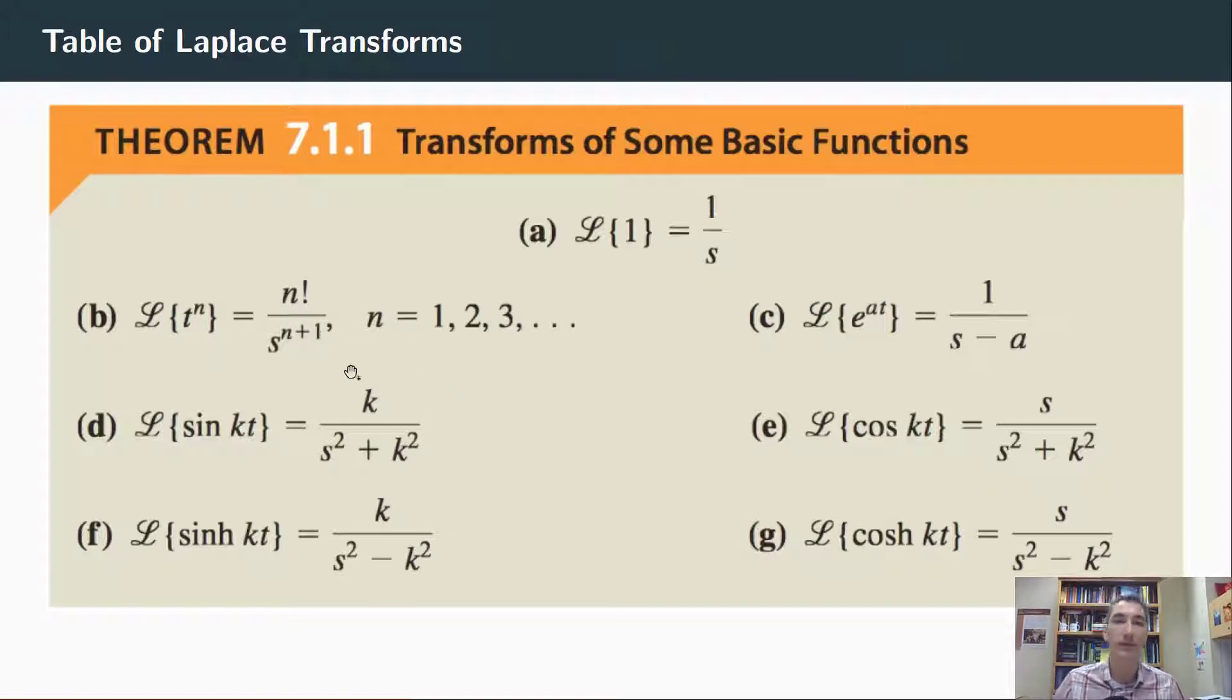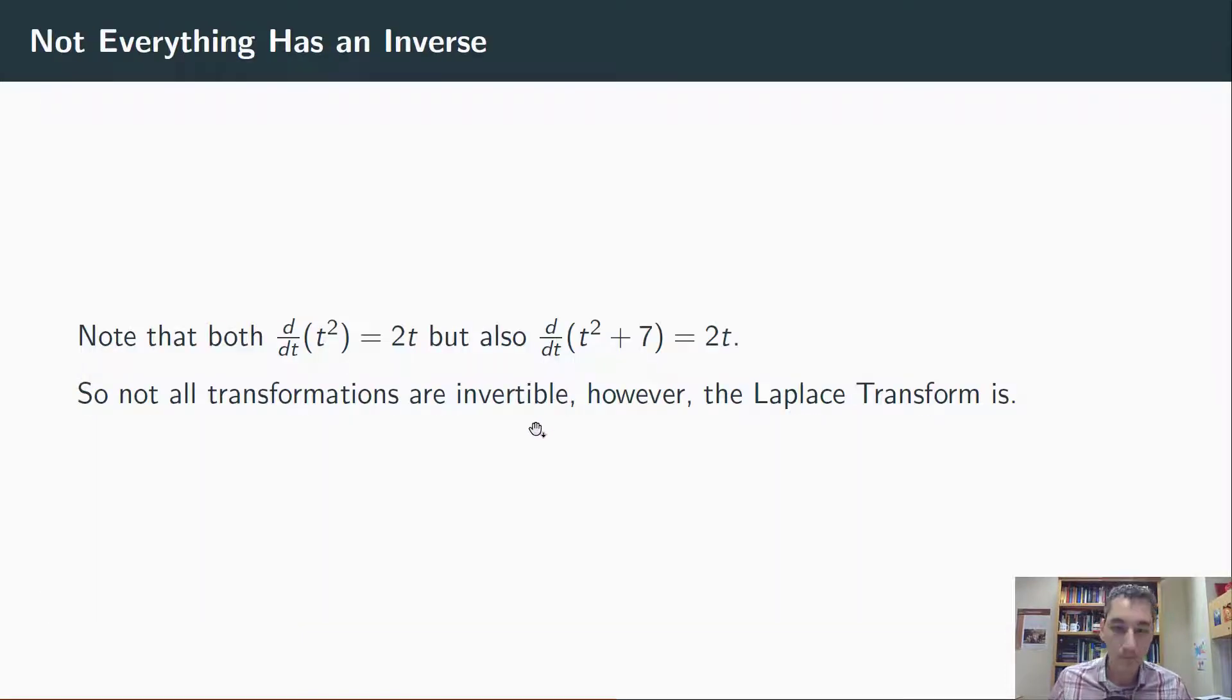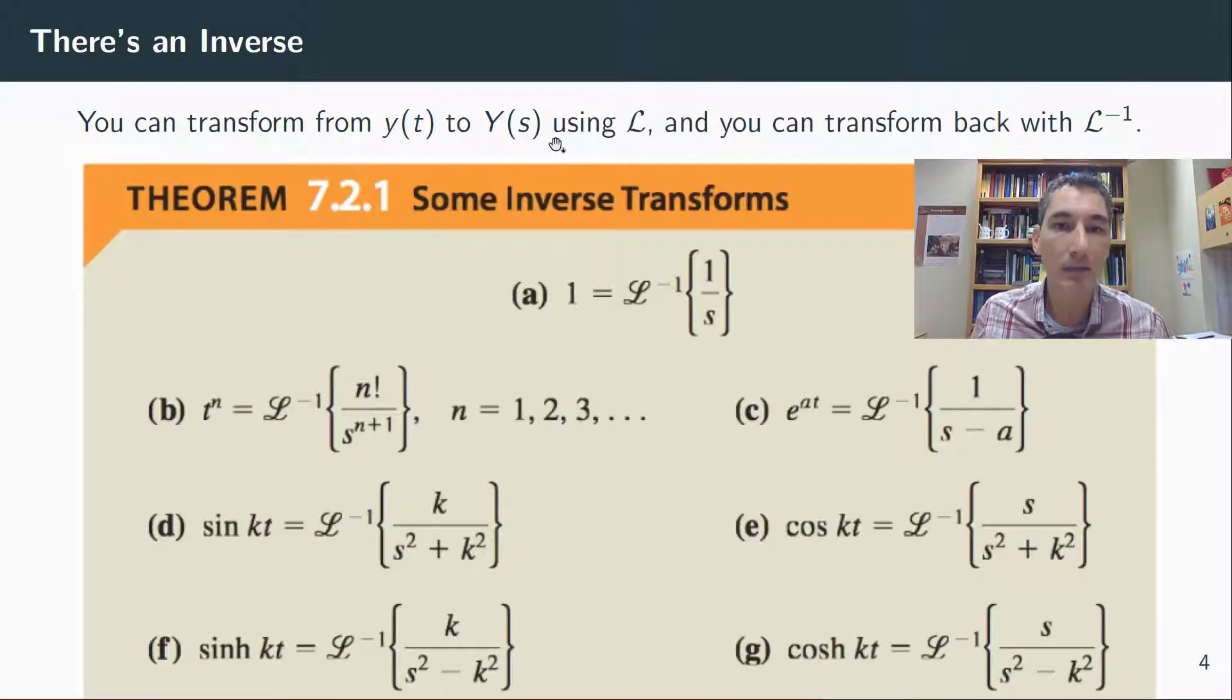Well, it turns out that doesn't happen that way. The Laplace transform is invertible, which means if you take a function, there's only one Laplace transform. And if you have a function of s in transform land, there is only one function of t that could have gotten to that s. So it goes both ways in a one-to-one fashion, whereas derivatives don't. 2t could have come from t squared plus anything—that kind of thing is not going to happen in Laplace.